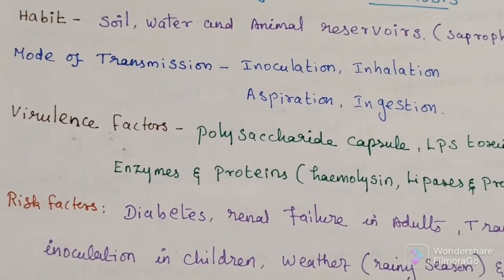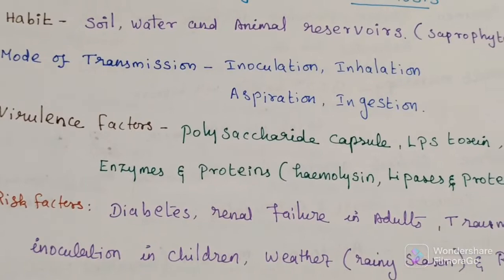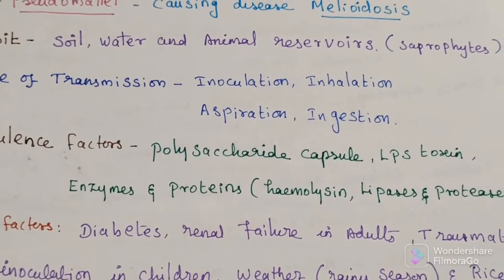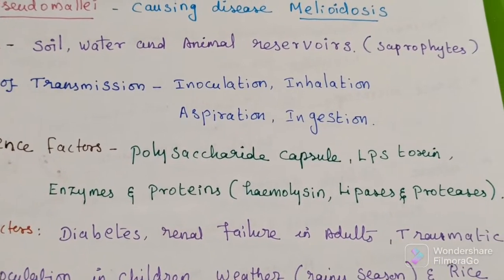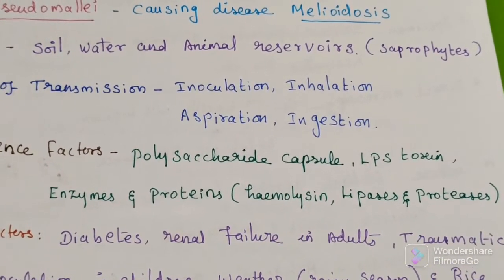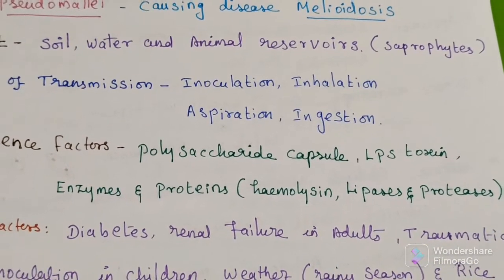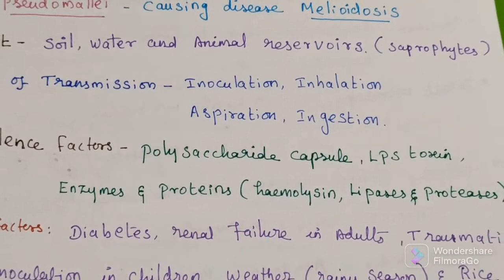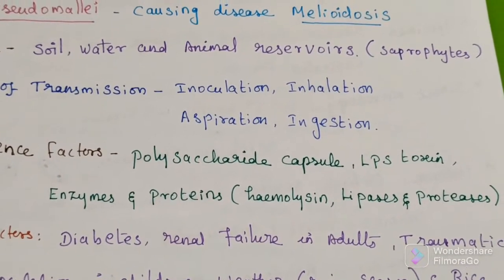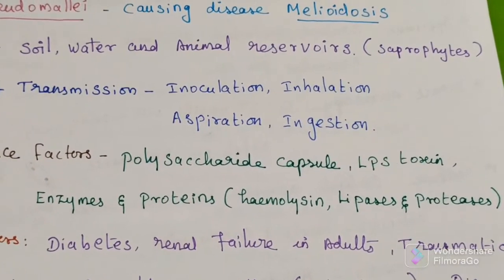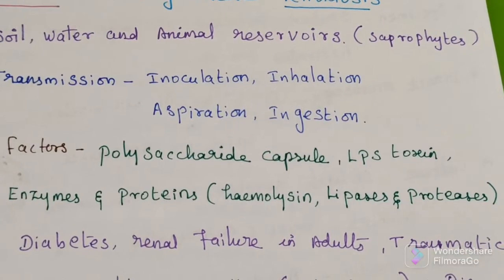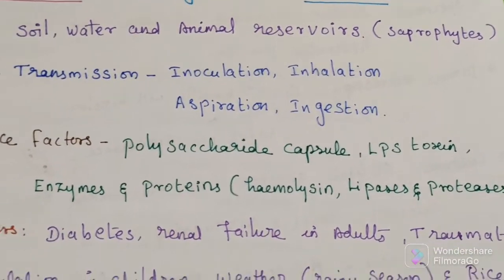Virulence factors of Burkholderia pseudomallei include polysaccharide capsules, LPS, toxins, enzymes, and proteins such as hemolysin, lipase, and protease.